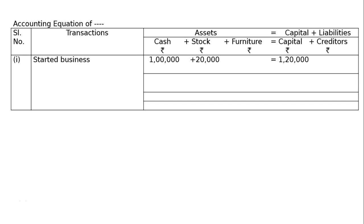First transaction: started business with cash and goods. When we start a business, cash will increase by one lakh and stock will increase by twenty thousand. Hence the initial capital will be rupees one lakh twenty thousand.